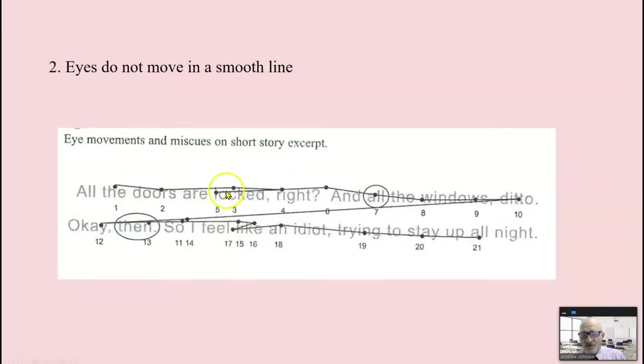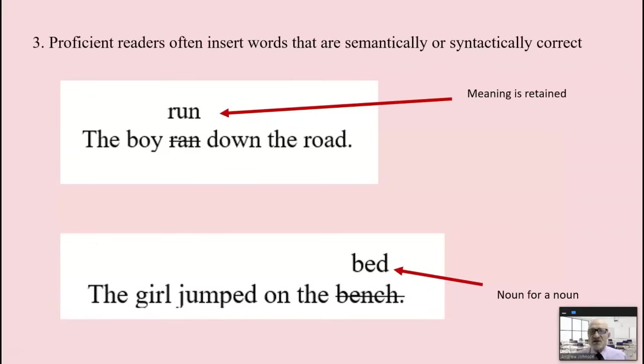And you can see the numbers represent the order in which they landed. You see how the eyeballs kind of go back and forth, regressions. Where they stop is called the fixation. The skips are the saccades. And going back is called the regressions. The phonological processing model does not account for that data as well.